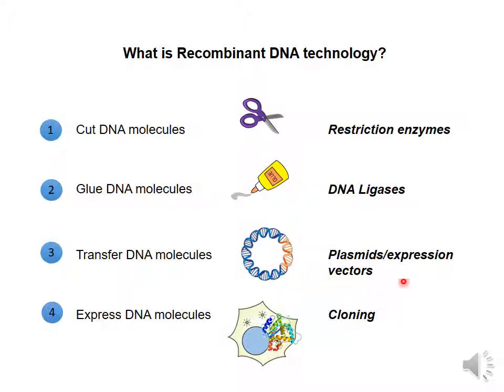The third element are plasmids or expression vectors to transfer DNA molecules. And the fourth element is cloning to express the DNA molecules that we insert in these expression plasmid vectors.